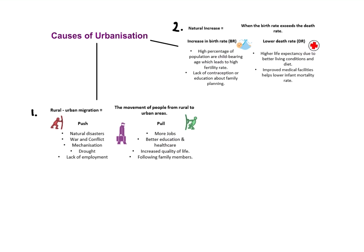Another pull factor is perhaps following family members already there. The second cause of urbanisation is natural increase — where the birth rate of a country exceeds the death rate, meaning more people are being born than dying. Higher birth rates can result from lack of contraception, more people of childbearing age, or a younger population. A lower death rate could be due to higher life expectancy from better living conditions or improved medical care.